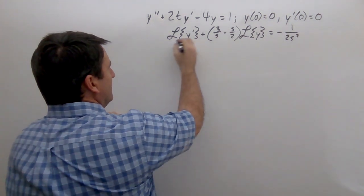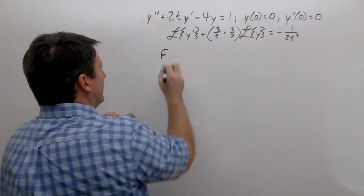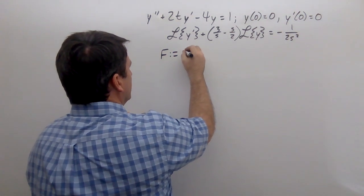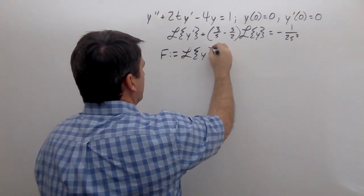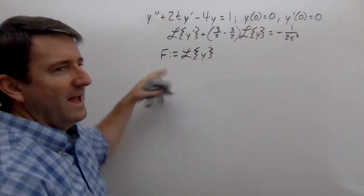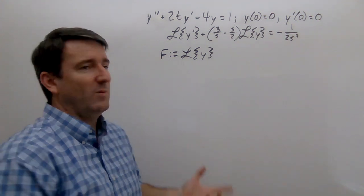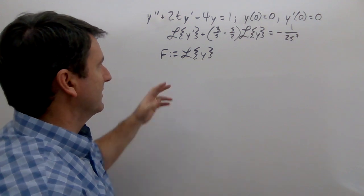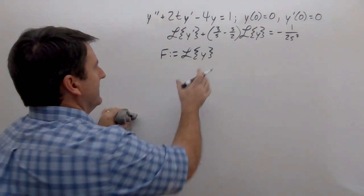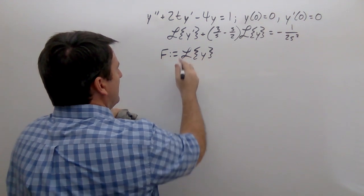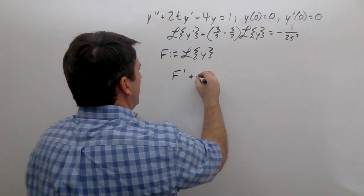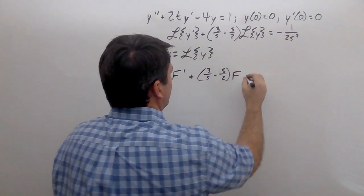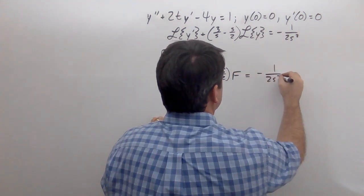For convenience, I'm going to define capital F as the Laplace transform of y — the book uses capital Y, but I'll use F to distinguish it from lowercase y. So now this equation becomes F' plus (3 over s minus s over 2) times F equals negative 1 over 2s squared. What we have here is a first-order differential equation in s that we can solve using methods from earlier in the course.